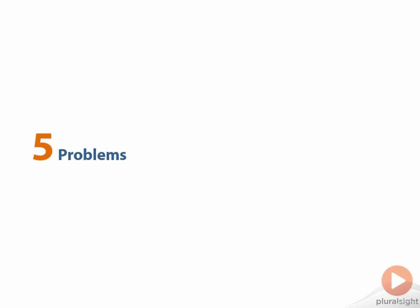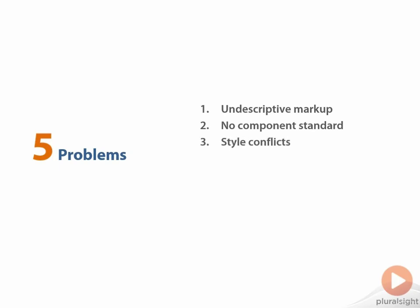So in summary, today's components have five core problems. They lack descriptive markup, so they're typically composed of mostly divs and spans. There's no standard, so each time you decide to choose a component library, you have to learn how the authors have chosen to structure their vision of reusable components. And since there's no way to encapsulate the styling for a given component, they suffer from style conflicts that require complex and verbose style sheets and class structures to avoid accidentally manipulating styles on pages.